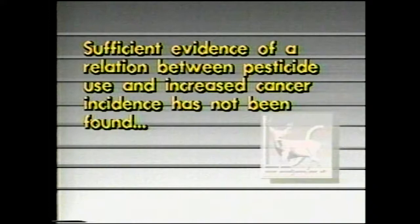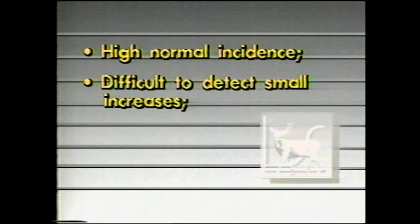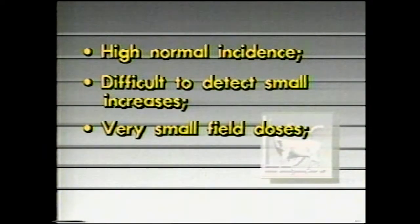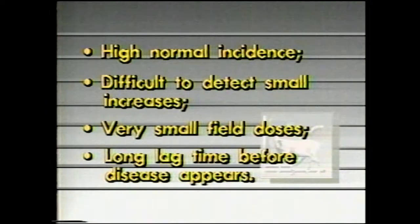Now let's look at the issue of the natural incidence of cancer. About a quarter of us can expect to contract cancer in our lifetime, and at present rates, about a fifth of us will die of cancer. As yet, sufficient evidence of a relation between pesticide use and increased cancer incidence has not been found, even in the case of pesticides known to cause cancer in the laboratory. Part of the reason is the high normal incidence of cancer and the difficulty of detecting any very small increase. Exposures in the field are much smaller than doses used in the laboratory, which are usually maintained at the highest level the animals can tolerate over a lifetime. Chemically induced cancer takes a large fraction of a lifetime to appear — in humans, this lag period may be as much as 15 to 30 years.